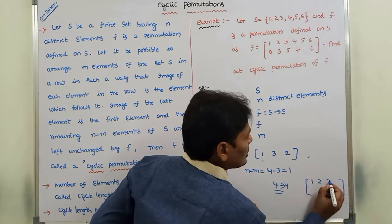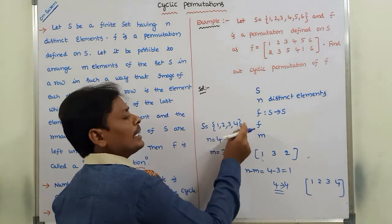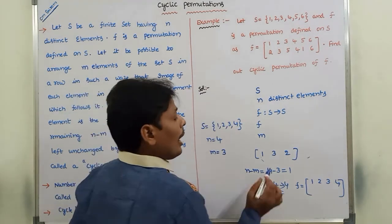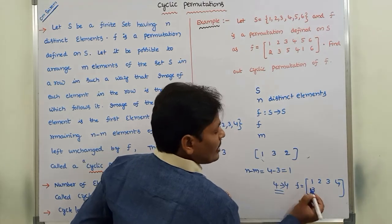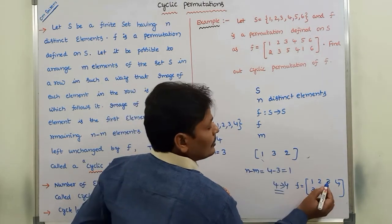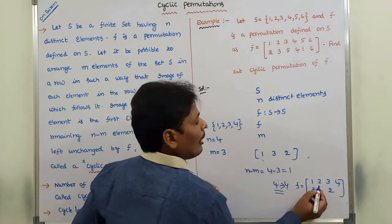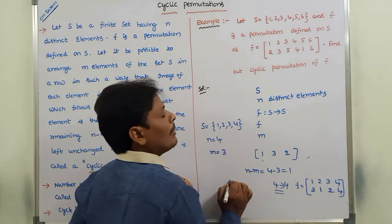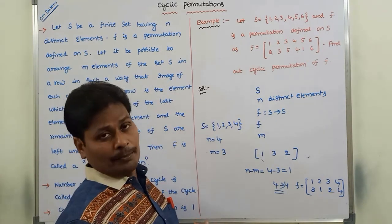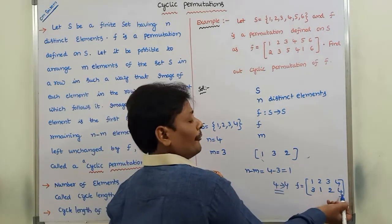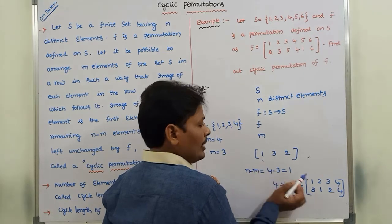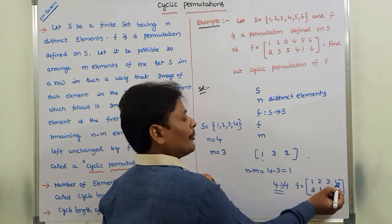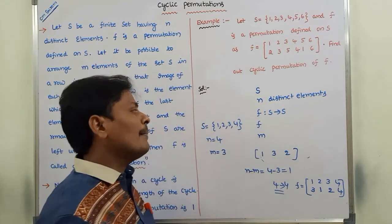So the permutation F can be written with the first row as 1, 2, 3, 4 and the second row as the images: one's image is 3, three's image is 2, two's image is 1, and four's image is 4, since the remaining n minus m elements' images are unchanged.